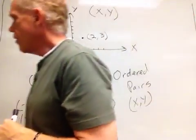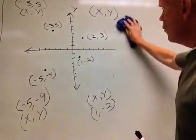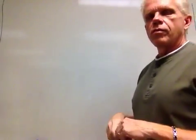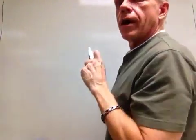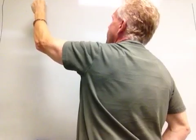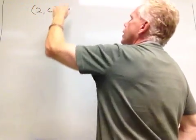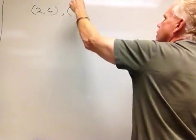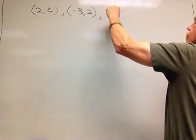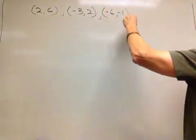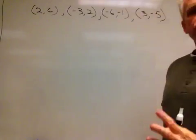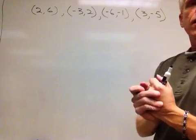Now, there's another aspect to ordered pairs that I want to talk about. Actually, before I do that, what I would like you to do is a quick exercise to make sure you're on board with me as far as ordered pairs. Suppose I were to give you some ordered pairs and ask you to plot these points on a rectangular coordinate system. We're going to go with the points: (2, 6), (-3, 2), (-6, -1), and (3, -5).